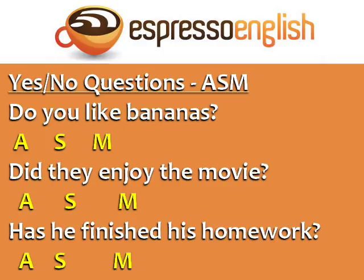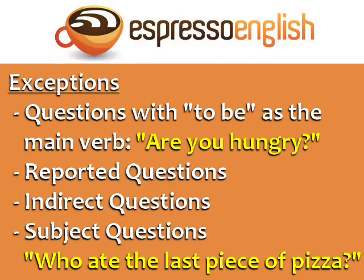In the case of yes/no questions, they don't have a question word, but they still follow the formula of auxiliary verb, subject, main verb. For example: 'Do you like bananas?', 'Did they enjoy the movie?', and 'Has he finished his homework?' A few exceptions to this formula include questions with 'to be' as the main verb — for example, 'Are you hungry?' — as well as reported questions, indirect questions, and subject questions like 'Who ate the last piece of pizza?'